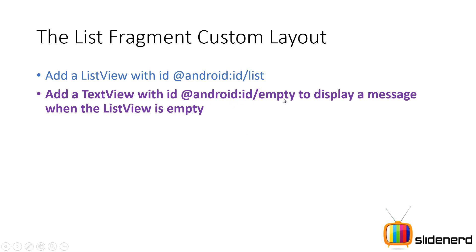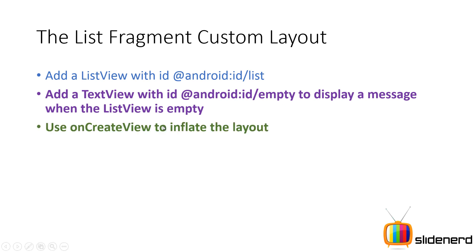The second thing, which is optional, is to have a TextView with the ID android:id/empty. You need this if you're downloading data for your ListView from HTML parsing, JSON parsing, or XML parsing — you want to ensure that the user sees a message when no data has been found, for example if your network is off or there's simply no data from the web service. This TextView with the special ID is displayed only when the ListView is empty.